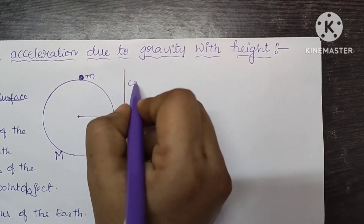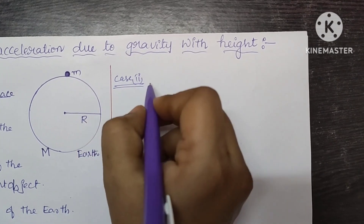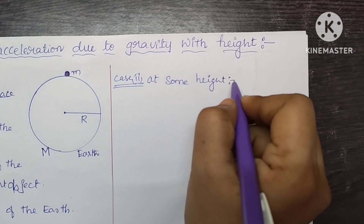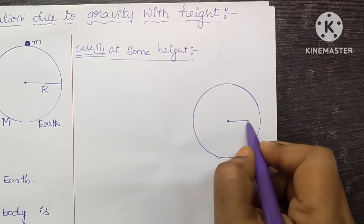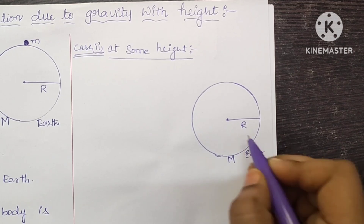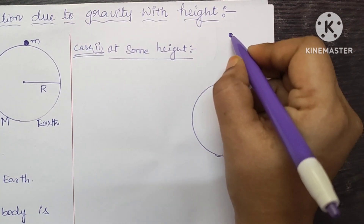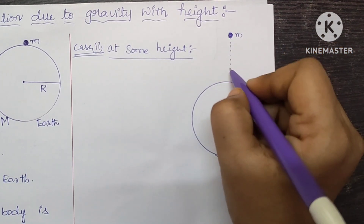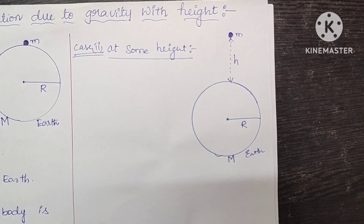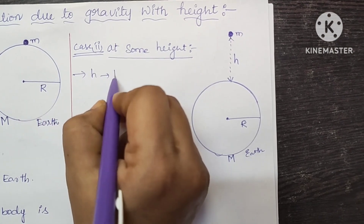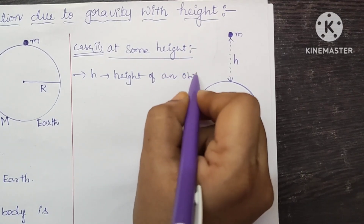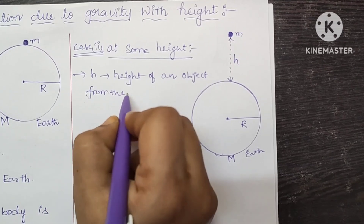Now let us consider Case 2, where the object is considered at some height. Here is the Earth with capital R as the radius and capital M as the mass of the Earth. I consider an object of mass small m at a certain height, let's say small h, from the surface of the Earth. So here small h is the height of the object from the surface of the Earth.